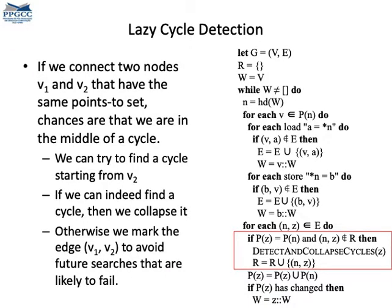To implement lazy cycle detection, basically, we add a small section to our old Anderson-style algorithm. It's this part in red. Upon adding a new edge from N to Z, if these nodes have the same values in their points-to set, we try to find and collapse a cycle in this graph, starting from Z.